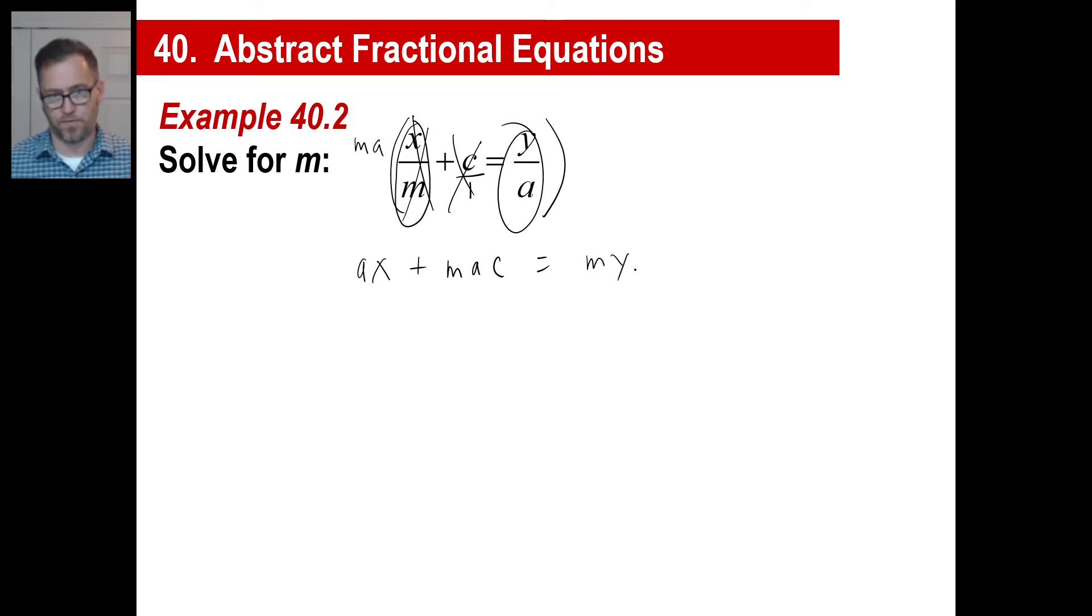And we're going to solve for m. So let's go ahead and keep mac on this side. Let's move over my, and let's move over ax. All right. Then you divide by m, so you get ac minus y equals negative ax. And, of course, to get m by itself, you're going to divide by this. So divide both sides by this. Let's just write it once. And then there you go. And that's the value of m.